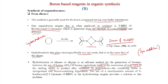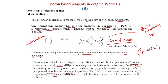Hydroboration of alkynes is an efficient method for the generation of borons. However, use of borane equivalents leads to conversion of only 33% of the starting olefin to product after oxidation or protonolysis; the remaining olefin is incorporated into boron-containing byproducts. This problem can be solved by using a stoichiometric amount of 9-borabicyclo[3.3.1]nonane (9-BBN) as the hydroborating reagent, which provides high yields of the hydroborated products.